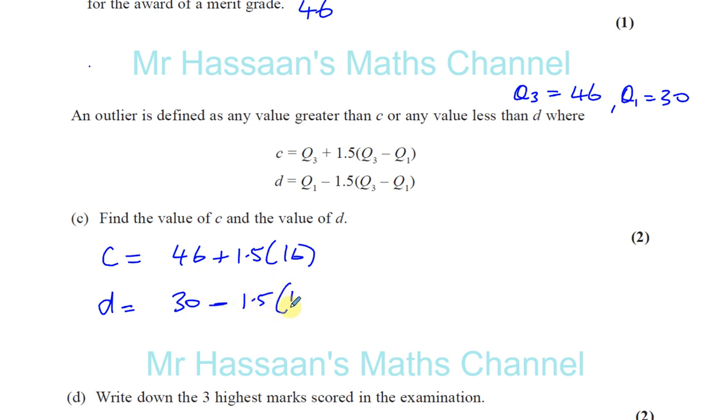And D is going to be the lower quartile, which is 30 minus 1.5 times the difference between the upper and lower quartile, which is 16.